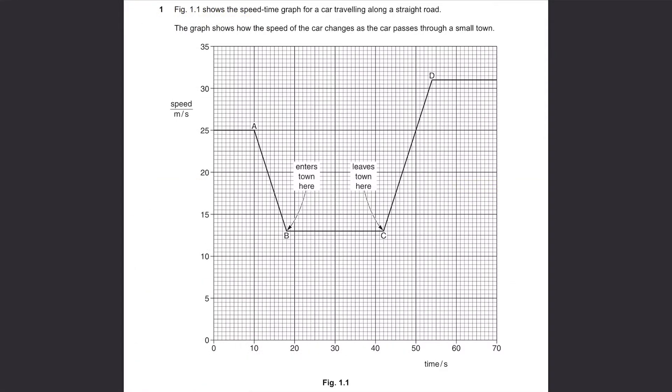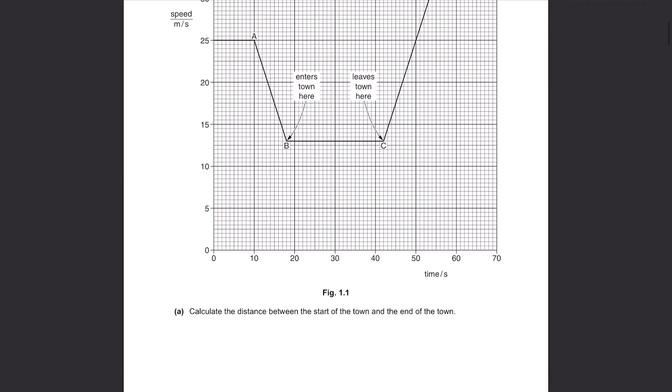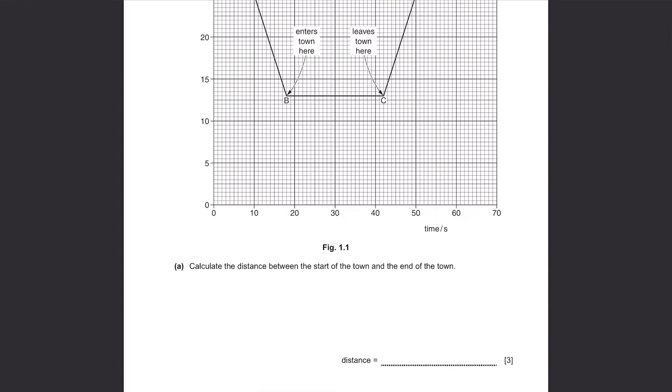Question 1. Figure 1.1 shows the speed time graph for a car travelling along a straight road. The graph shows how the speed of the car changes as the car passes through a small town.